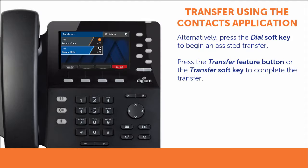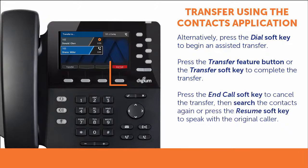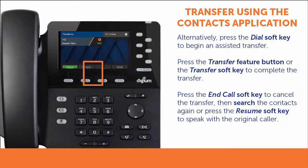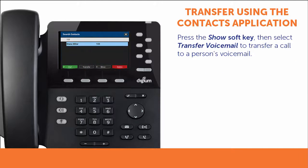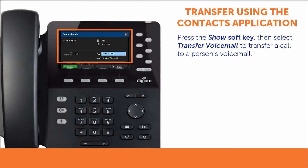If you wish to cancel the assisted transfer, press the End Call soft key. You may then repeat the contact search process or press the Resume soft key to speak with the original caller. If you want to transfer the call to the person's voicemail, press the Show soft key, then select Transfer Voicemail.